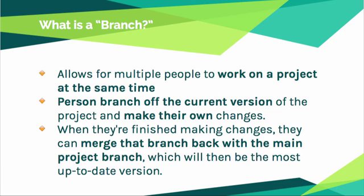Branching. What branching does is it allows for multiple people to work on a project at the same time without interrupting each other, without stepping on each other's toes, or overwriting each other's work. That's what used to happen back in the day where somebody would pull down a file and another person would pull down the same file, they'd both work on something, and whoever uploaded last would be the one that got the changes — and that really stunk.